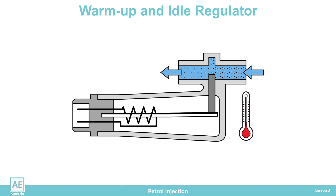A bimetal is a combination of two metals that have different thermal expansion. This causes the bimetal to bend with temperature change. At the free end of the bimetal, there is a valve that regulates the airflow through the bypass line.